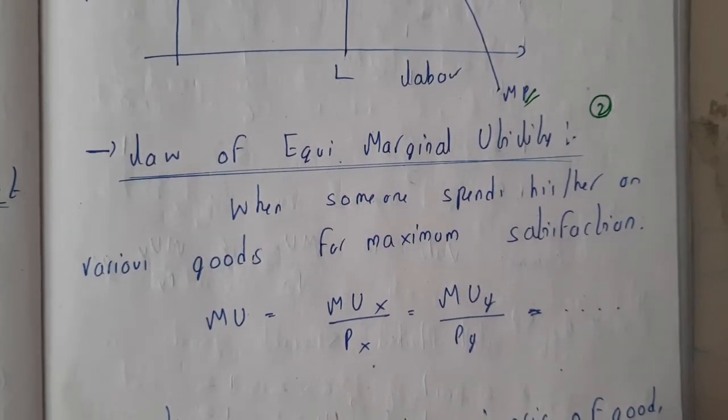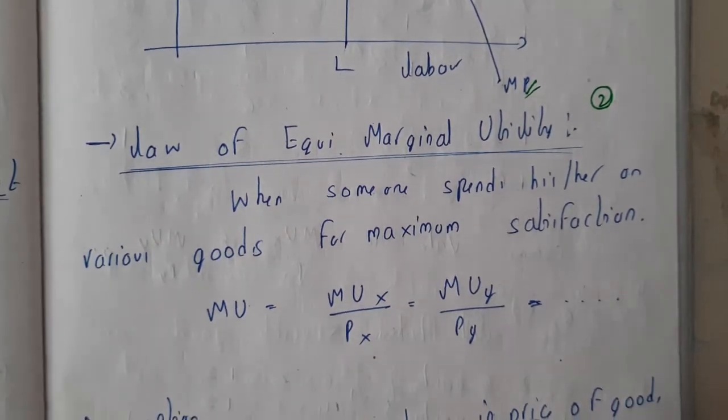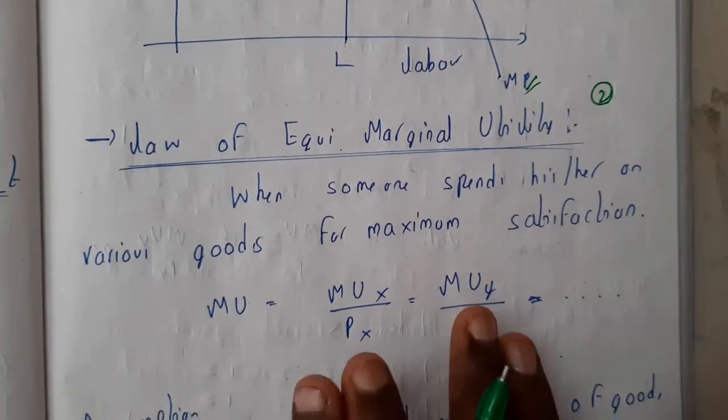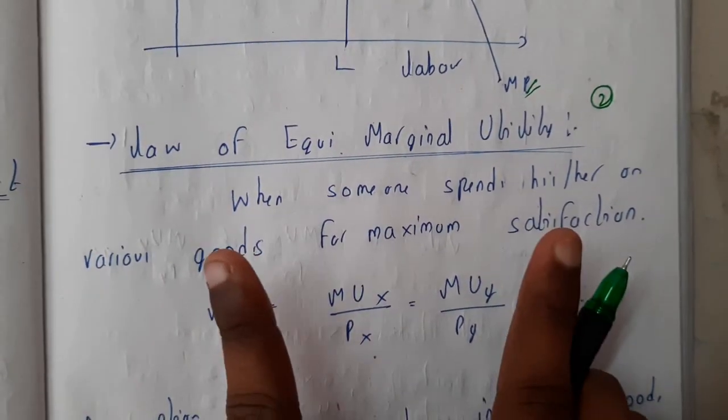Hello guys, we are back with our next lecture. In this lecture, let us go through the law of equi-marginal utility. In the previous lecture, we went through diminishing utility where we considered only one product. Here, if we have two products and we want to get maximum satisfaction, how can we get it?